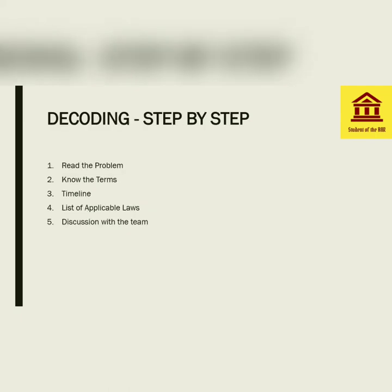Now that we know what a moot proposition is, let's learn how to understand one. Decoding a moot problem has five simple RKTLD steps: Read the problem, Know the terms, Timeline, List of applicable laws, and Discussion with the team. Let's understand these RKTLD steps one by one.